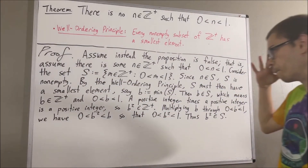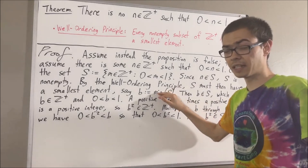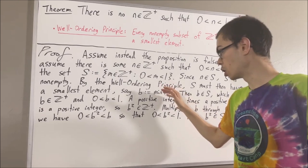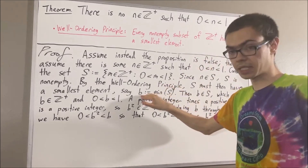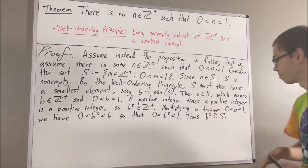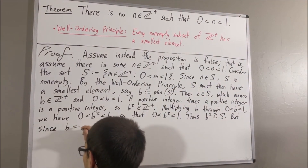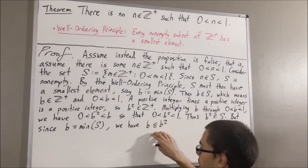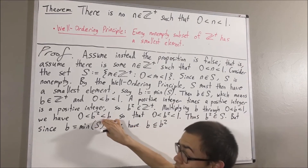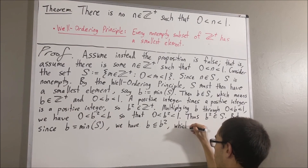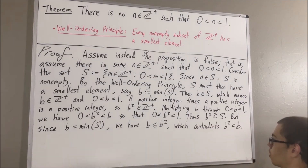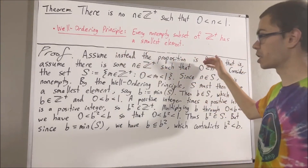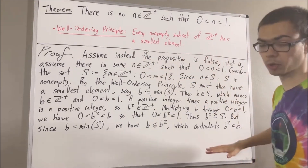But since b is the smallest element of S, this means that b is less than or equal to every element of S. So in particular, b must then be less than or equal to b squared. But this contradicts the fact that b squared is less than b. So we've reached a contradiction — our assumption that the proposition is false led us to a contradiction.